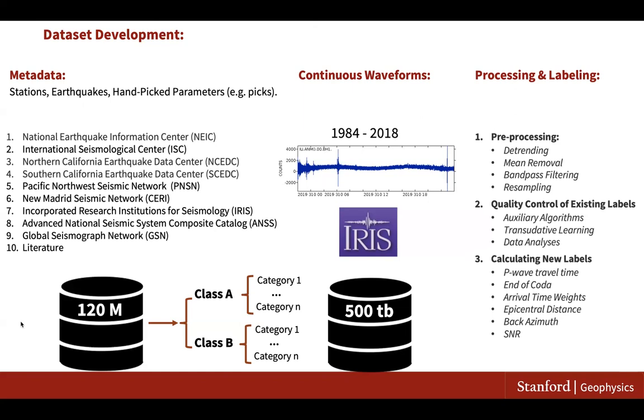For other labels like earthquake location and estimated magnitude, it's hard to check their quality. We provided the estimated errors whenever they were reported by our resources. Then we calculated and added some new additional labels as listed here.